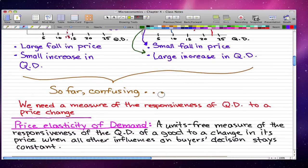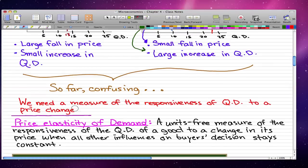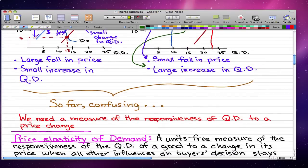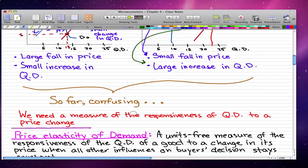That leads us to the price elasticity of demand. This is what's going to save the day. The price elasticity of demand is a units free measure of the responsiveness of the quantity demanded of a good. This will explain why a large fall in price gives a small change in quantity demanded. It's a units free measure and it measures the responsiveness of the quantity demanded of a good to a change in price.